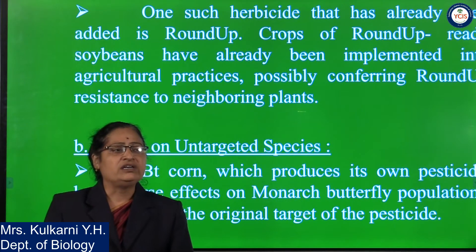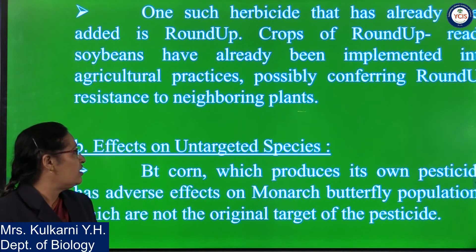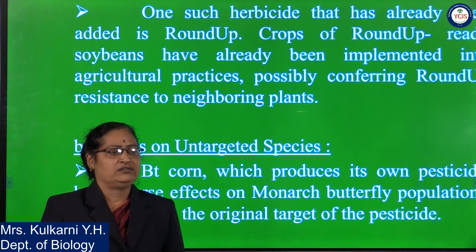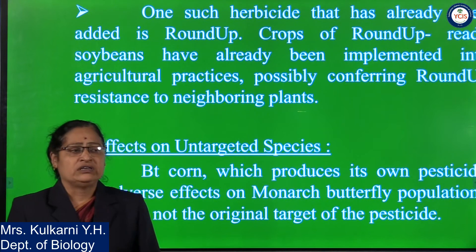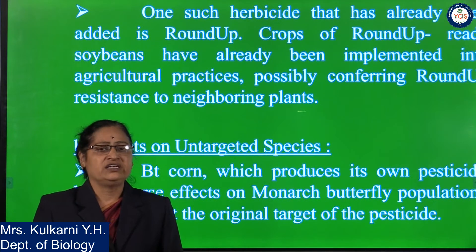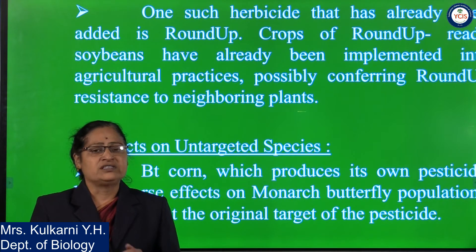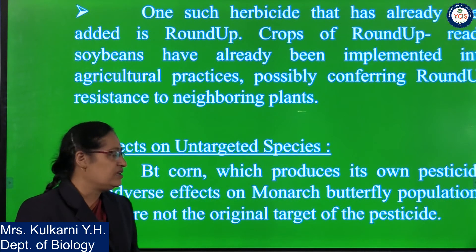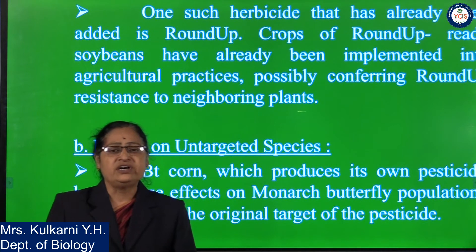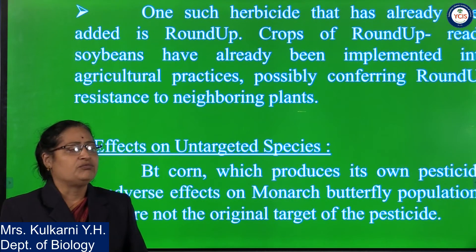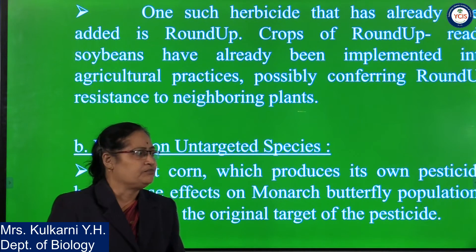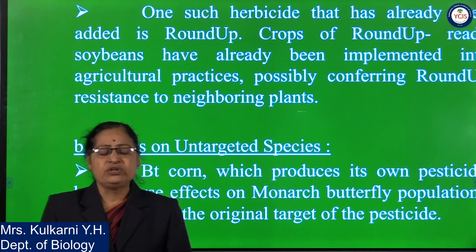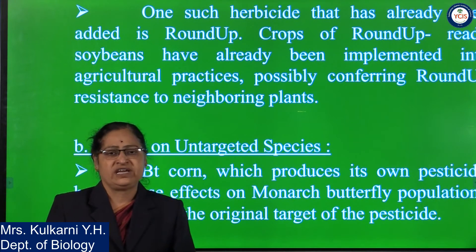The next point is effect on untargeted species. The effect should ideally be only on targeted species, but some varieties like Bt corn have their own pesticide and have an adverse effect on Monarch butterfly populations, which are not the original target of the pesticide.